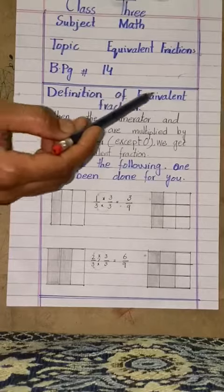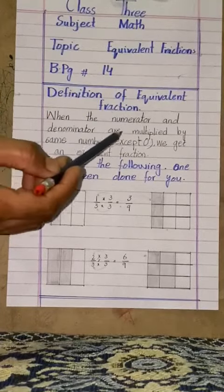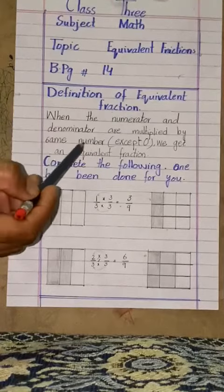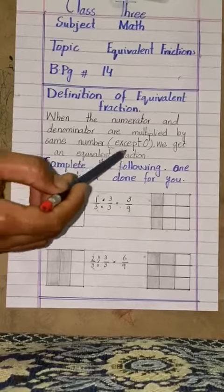Definition of equivalent fractions: when the numerator and denominator are multiplied by the same number except 0, we get an equivalent fraction.